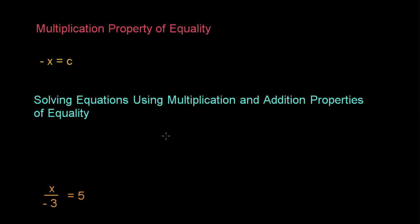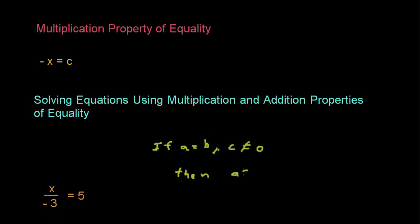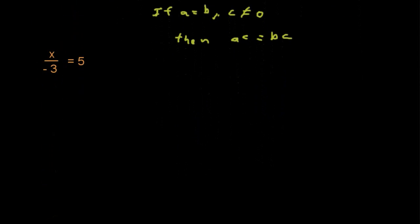First we better state what the multiplication property of equality is. It's stated in symbols as follows: if you have a equals b, and you have c which is not equal to 0, and you multiply a times c, that will be equal to b times c. But how does that apply to what we're doing in this lesson?